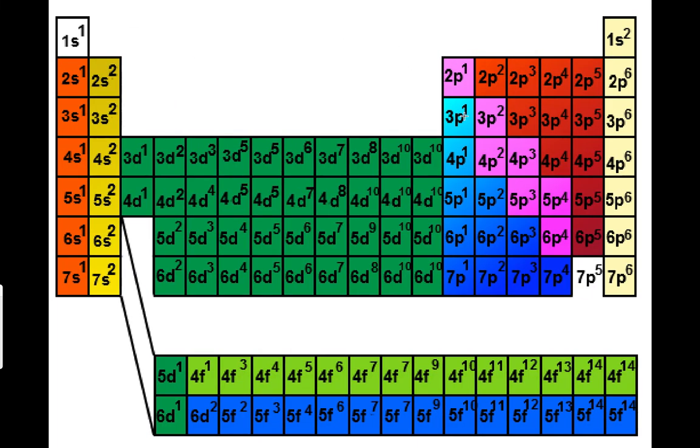Here is the electron configuration. So hydrogen would be 1s1, helium 1s2, beryllium 2s1, lithium 2s2, boron 2p1. This is the ending of the electron configuration.